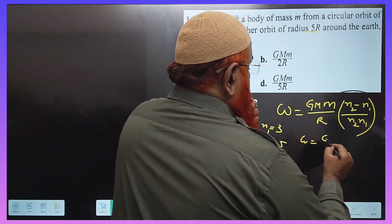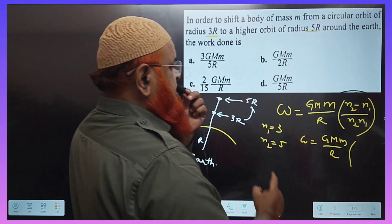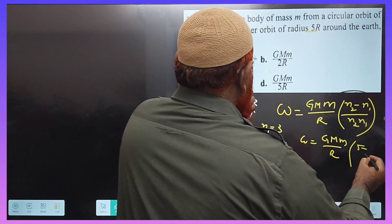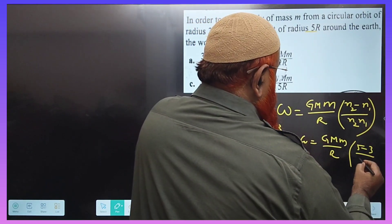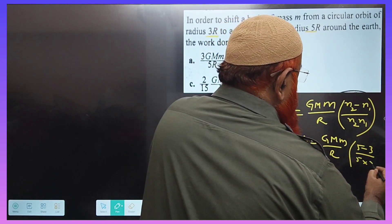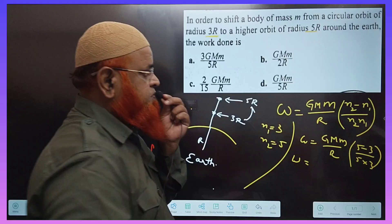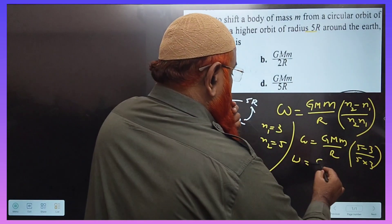W equals GMm/R times (n2 minus n1)/(n2 times n1), which means (5 minus 3)/(5 times 3). So we will be getting W equals, using this direct single step method...